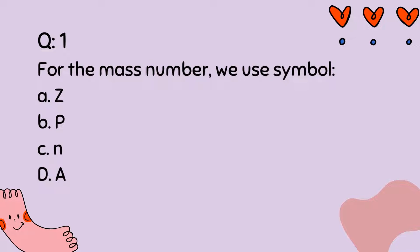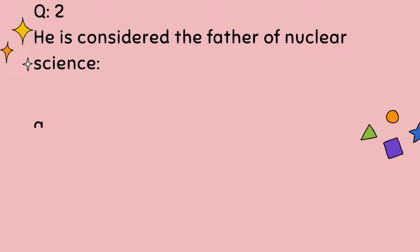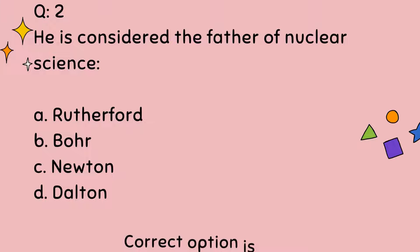Question number 1. For the mass number, we use symbol: A, Z, B, P, C, N, D, A. Correct option is D. Question number 2. He is considered the father of nuclear science: A, Rutherford, B, Bohr, C, Newton, D, Dalton. Correct option is A.